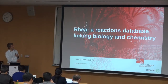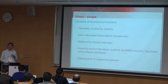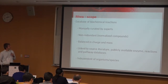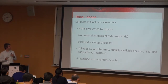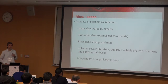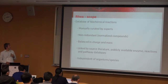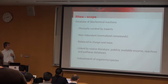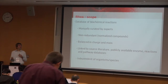Rhea is a collaborative project between the SIB and the EBI. So what is the scope of the Rhea database? Rhea is a database of biochemical reactions. The biochemical reactions in Rhea are manually curated by experts. We try to have, as much as possible, a non-redundant database with normalized compounds at the chemical level. Because the compounds are normalized, it's possible for us to do balancing, so all the reactions are balanced in charge and mass. We link the reactions in Rhea to source literature, to publicly available enzyme classification databases, existing reaction databases, and pathway databases. A particular feature of Rhea is the fact that it's independent of the organism or a given species.